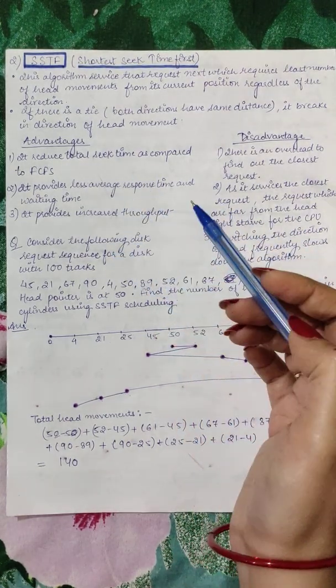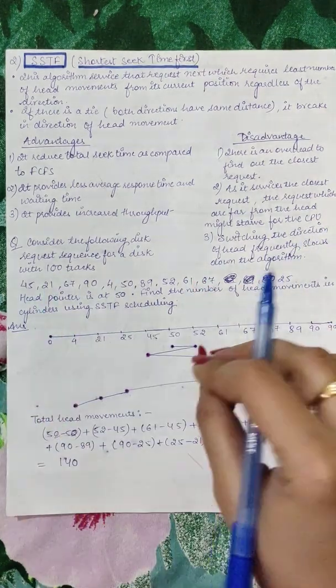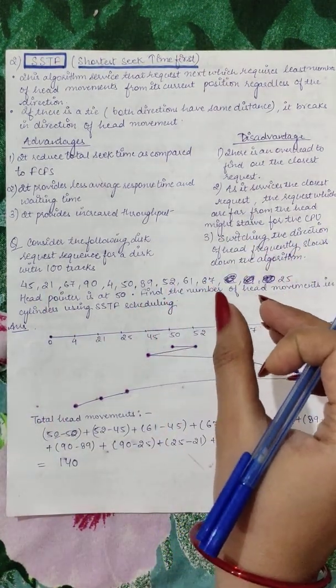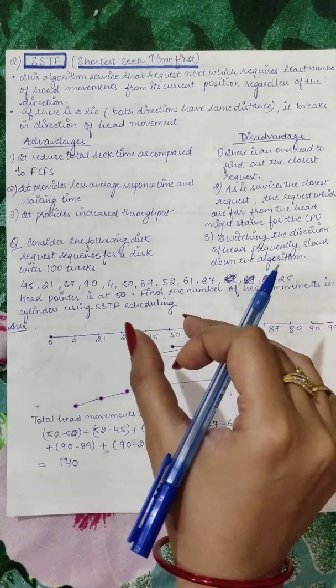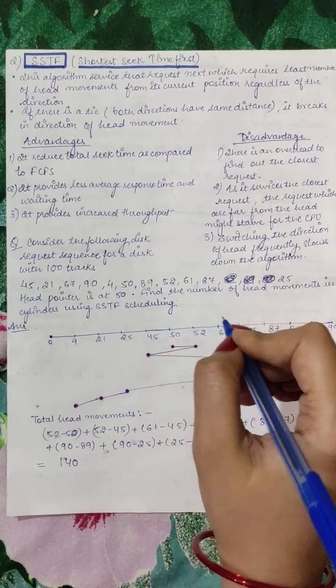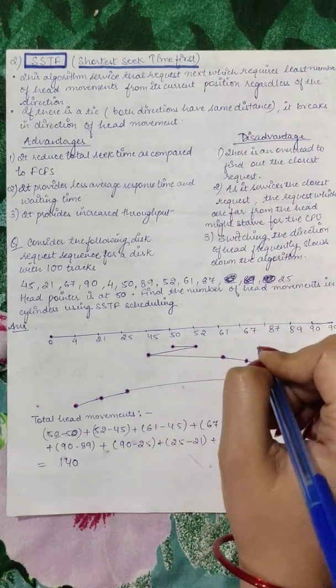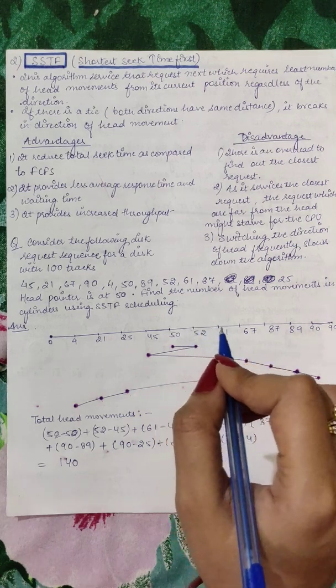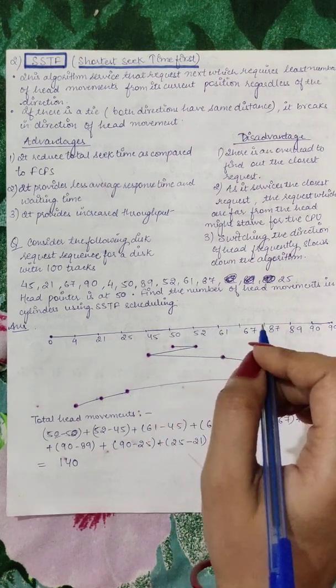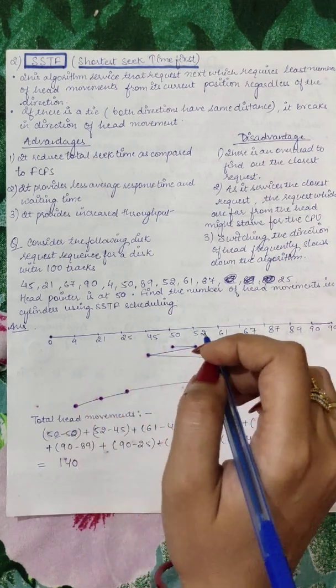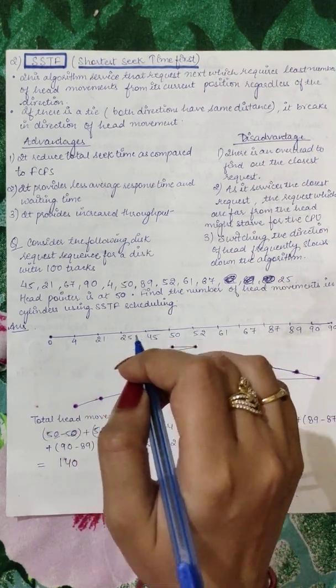And if there is a tie, that means head here and head here, if the distance is equal to both sides and the number of tracks to travel is the same, then we will go in the direction of head. If the movement of head is moving in this direction, then we will consider this movement. And if the movement of head is moving in this direction, then we will go to the request on this side.